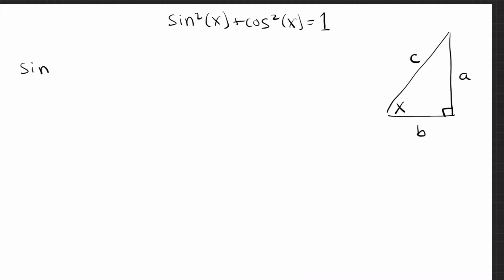So let's try something here. What is sine of x? If we look at the triangle, we know sine is opposite over hypotenuse, so it's a over c. And what is cosine? Cosine is adjacent over hypotenuse, so that is b over c.